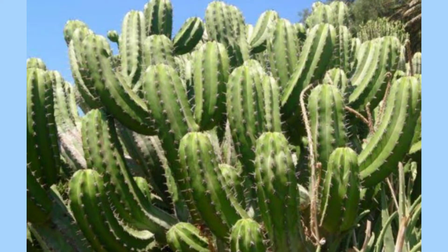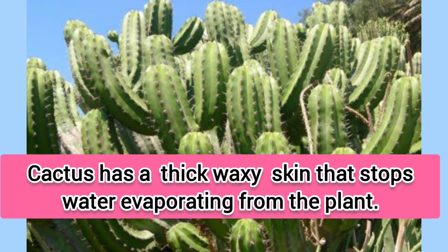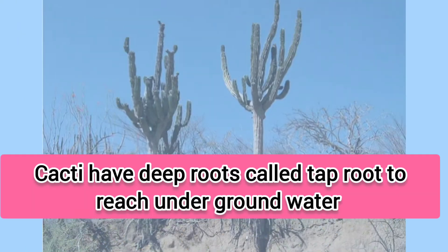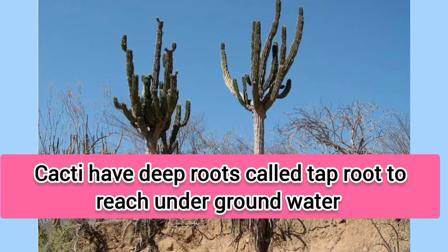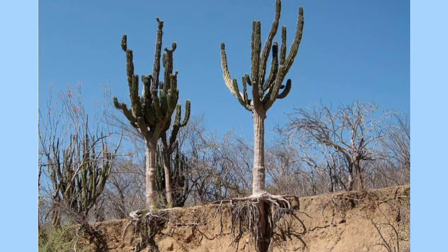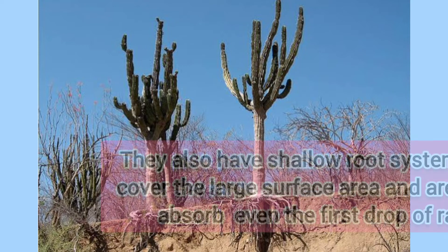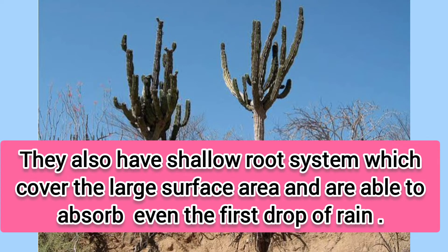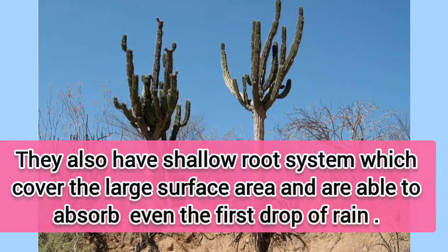A cactus plant has adapted in many ways in order to survive. It has a thick, waxy skin that stops water evaporating from the plant too easily. They grow deep roots called tap roots, which bury themselves deep into the ground to reach underground water stores. They also have extensive shallow root systems which cover a large surface area and are able to absorb even the first drop of rain.